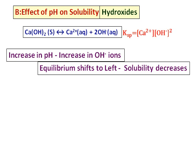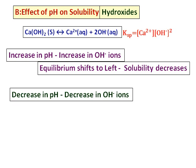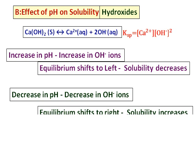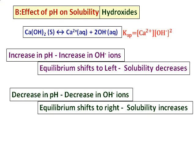If I decrease the pH, that means I am going more towards the acidic side and decreasing the hydroxide ion concentration. Therefore, the equilibrium will shift towards the right, towards the products, and solubility will increase.